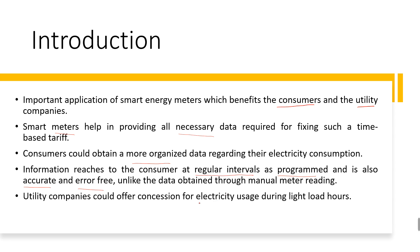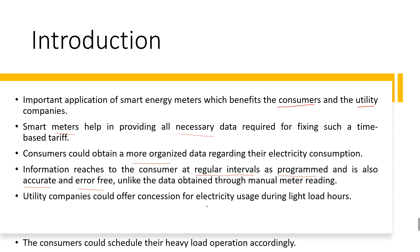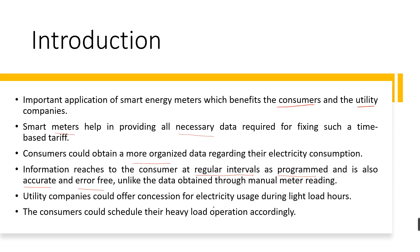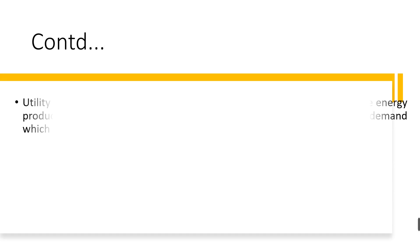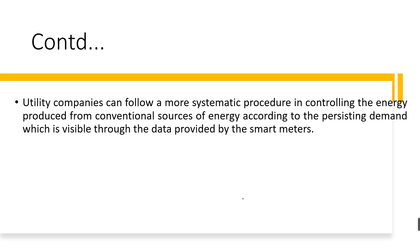Utility companies can offer concessions or impose penalties based on electricity usage during low load or peak load periods. Consumers can schedule the operation of heavy loads according to the schedule shared by the company, planning connection and disconnection of load accordingly. Utility companies can then follow a more systematic procedure in controlling energy production and utilize their available resources in the best possible way.